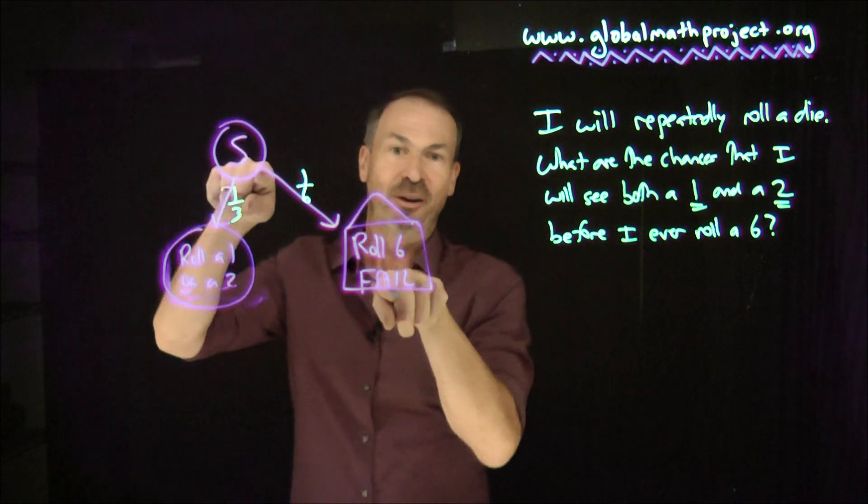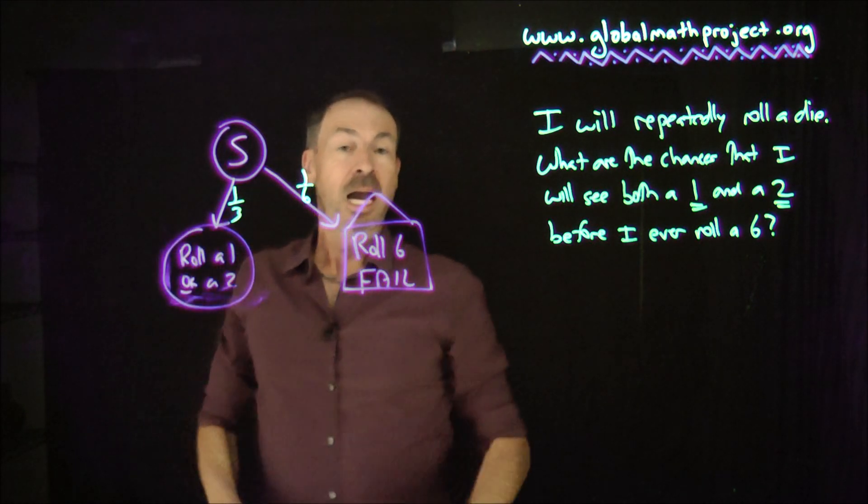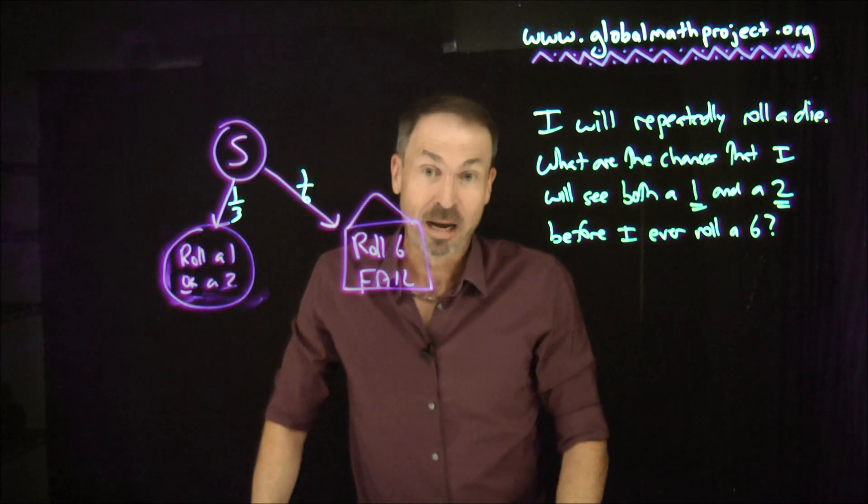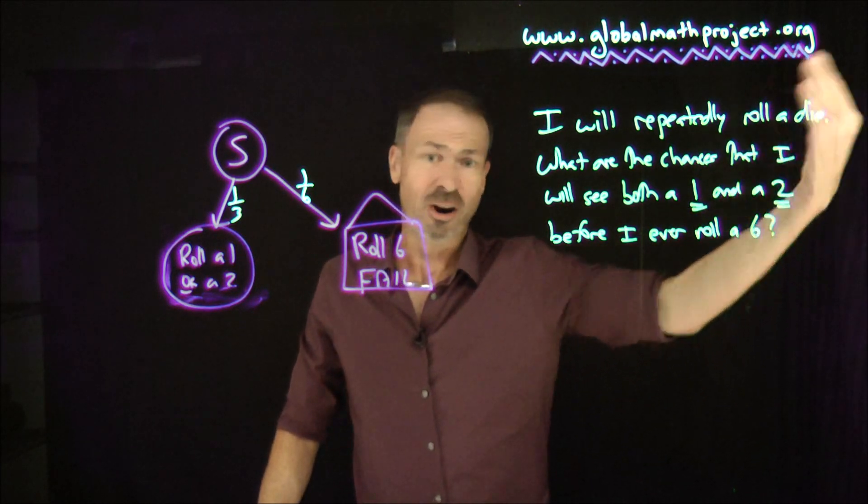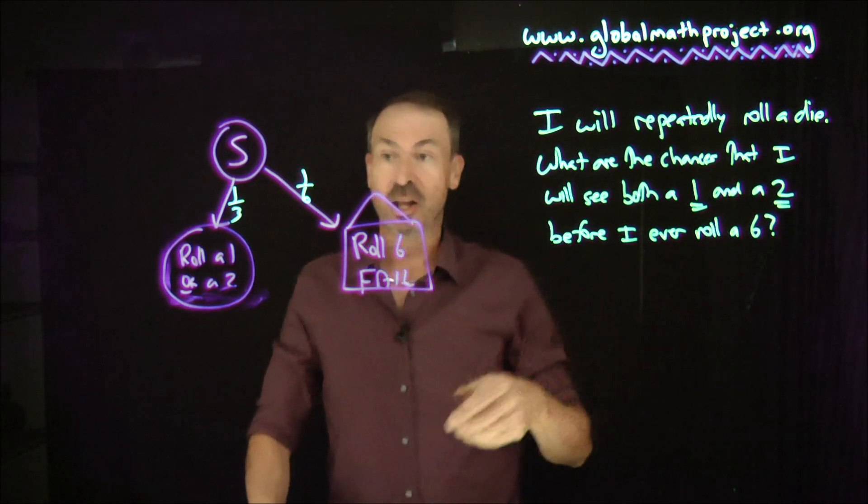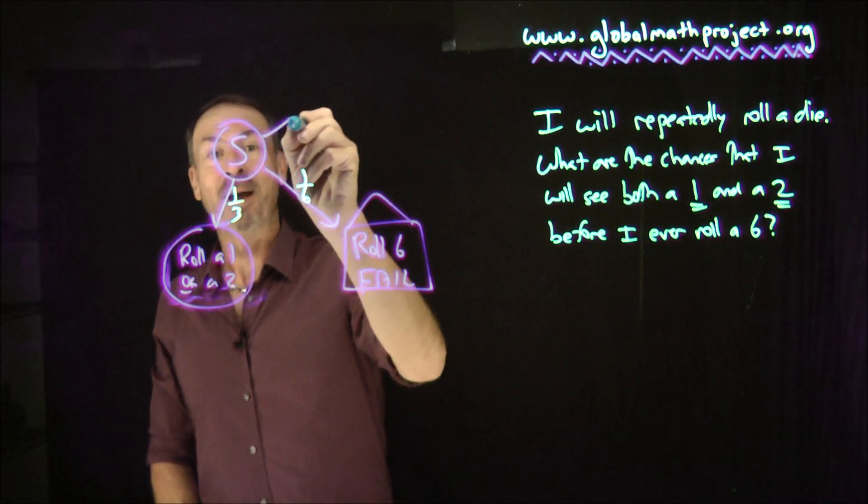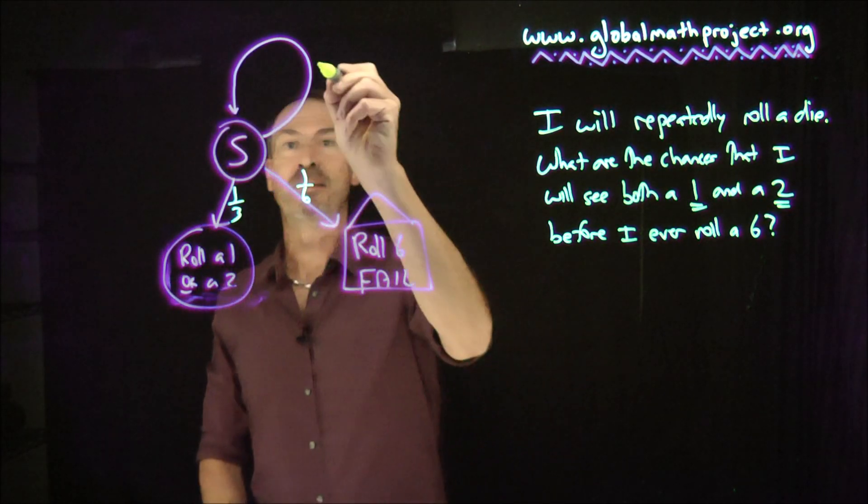So rolling a 6 takes you to fail house right away, rolling a 1 or 2 gets you going, and if you roll anything else, a 3, 4, or a 5, well, that's irrelevant to the problem. You're just going to try again, keep rolling until you get either 1 or 2 or get a 6. So the people that roll 3, 4, or 5 basically go back and try again. And that's 3, 4, or 5, that's half the people.